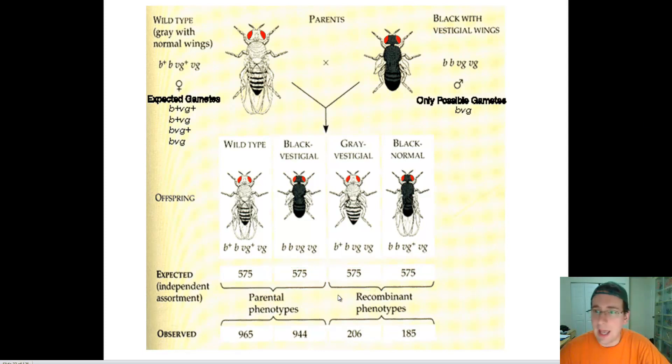But in fact, what actually happened is that he got 965 that looked like the mother or the wild type of the mother, 944 that looked like the mutant type for both traits like the dad, and he called them the parental phenotypes. Remember, parental phenotypes are the phenotypes or genotypes that match the parents. And then you have two of these which do not match the parents, which he called the recombinant phenotypes. So the phenotypes that do not match the parents.